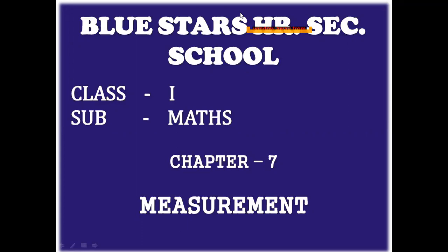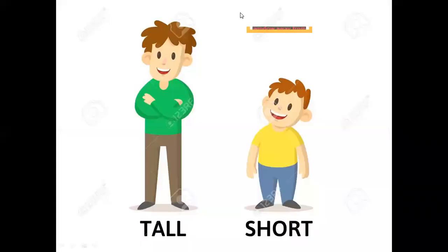Now see the example children. See the boy wearing green colour shirt now. He is looking tall. The boy wearing yellow shirt, he is looking short. Tall, short.